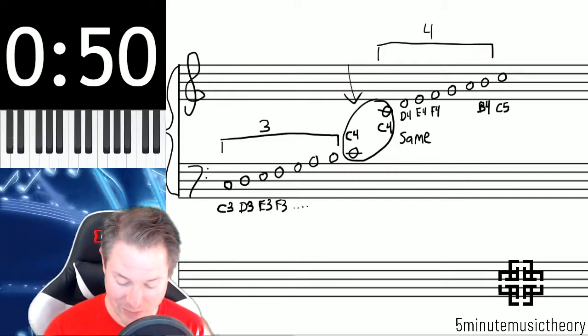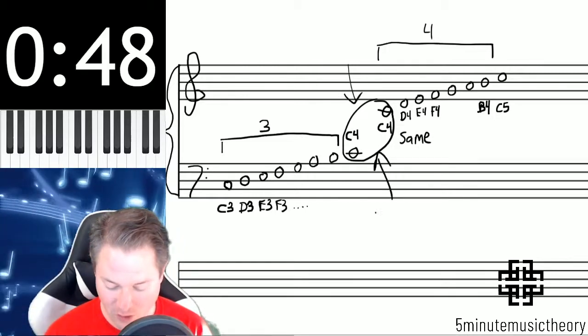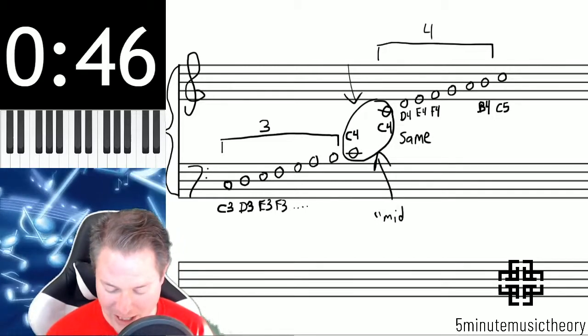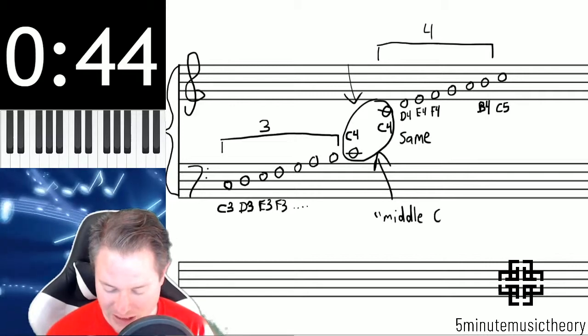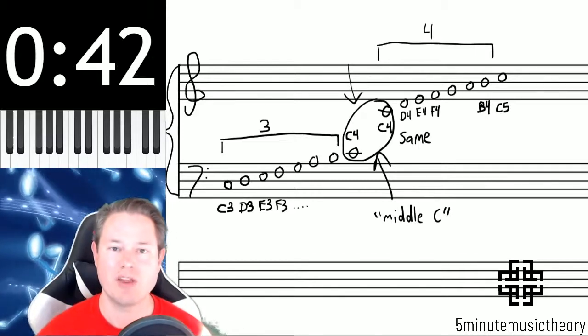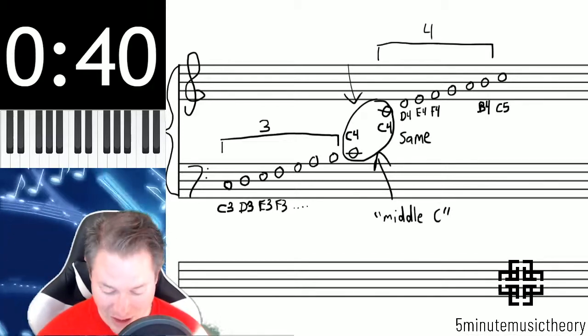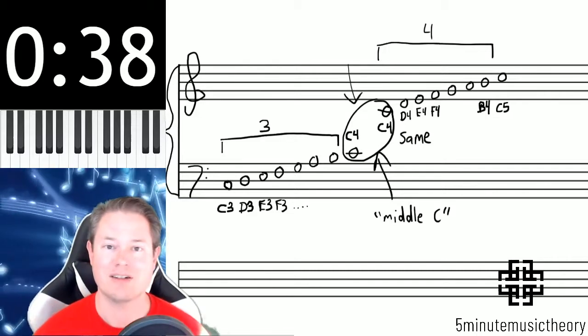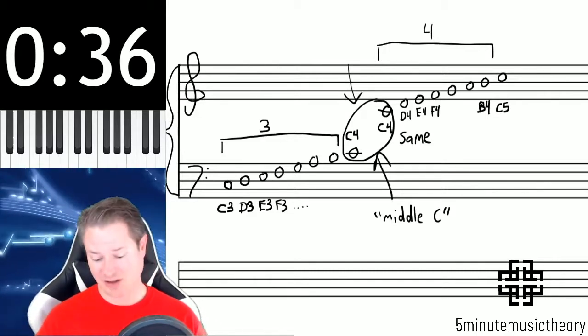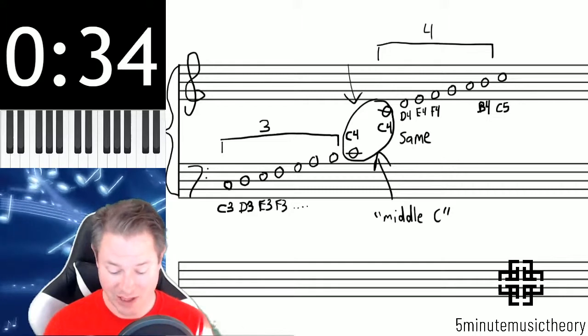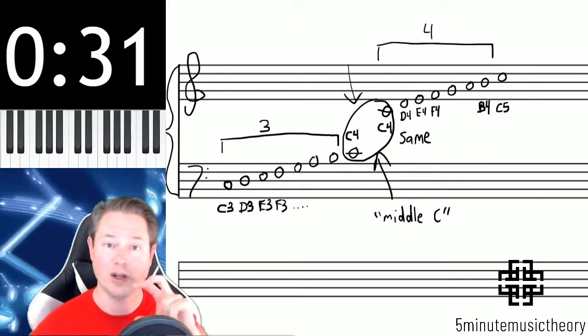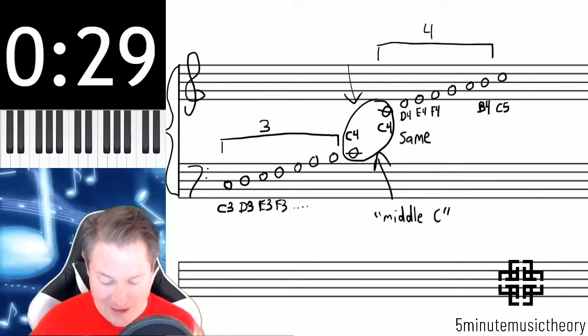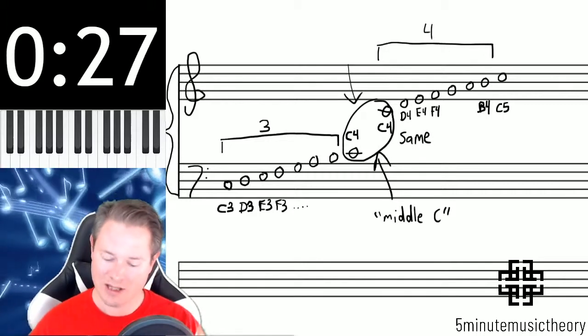The really important things to remember about octave register is a couple of things. First, this C that fits right in the middle of the staff is C4, also referred to as middle C. Once we talk about the piano keyboard in a video soon to come, you'll learn why this is called middle C. And actually you can kind of see it here in the treble and the bass clef grand staff combination here, that it's right in the middle of that grand staff. C4 is the one right in the middle.